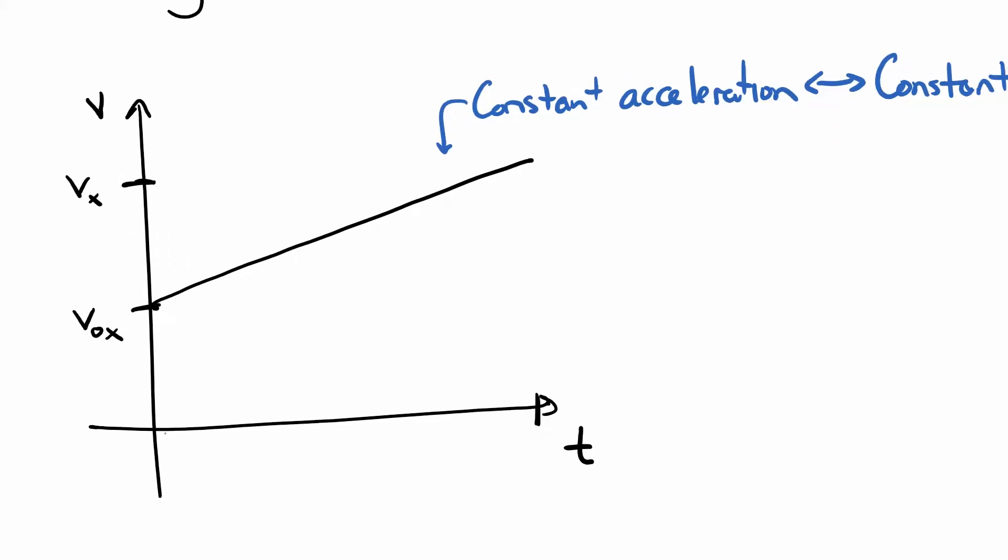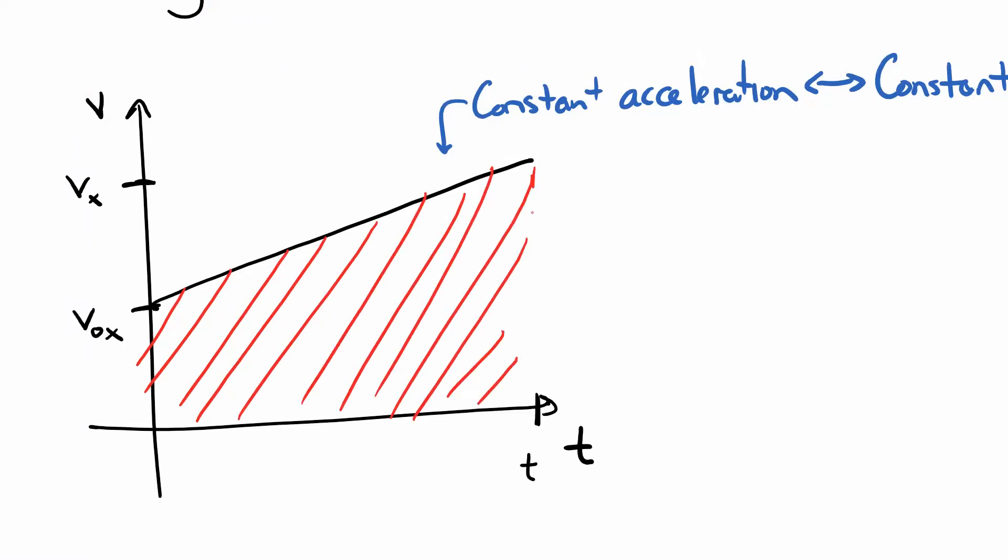We're going to start at time t equals zero, because we can start our stopwatch whenever. And we're going to end at some time t that is just plain old t. Not to be confused with the axis t, even though that's confusing. Now, before we had said that the displacement looked like the area under the curve. So we want to find this area between the time axis and the velocity curve. One thing that's important to note, because this curve is above the time axis, I expect this to be a positive area. So I'm moving forward, which is good.